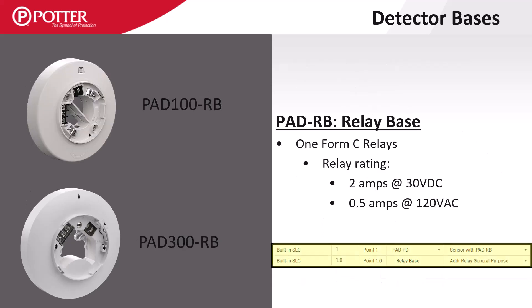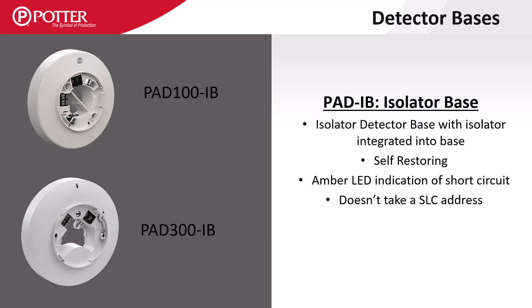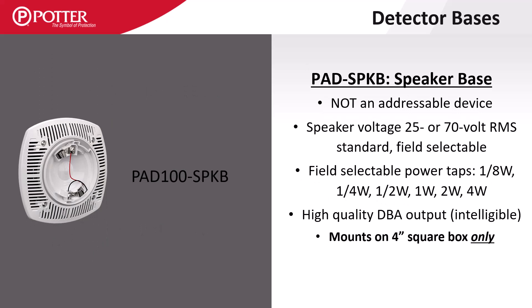The PAD RB offers a fully mappable Form C relay that becomes a sub-point of the detector it's housing. The PAD IB isolator base includes self-restoring short circuit isolation for the SLC circuit. The PAD SPKB is a speaker base that is not an addressable device — it has a speaker attached, so it requires SLC wiring for the detector in addition to the speaker circuit. The speaker base can only mount on a 4 square box.